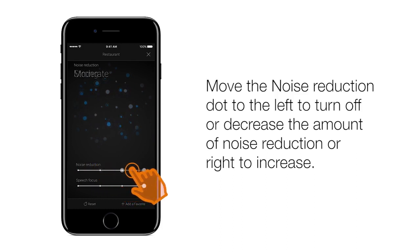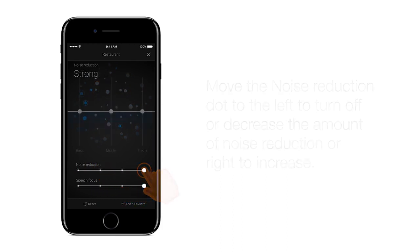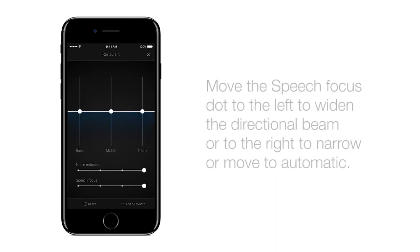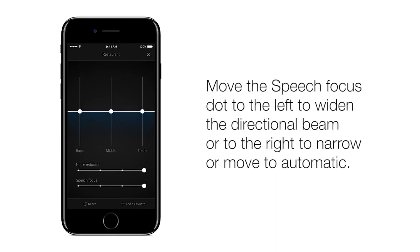Slides to the right one notch to mild, one more to the right: moderate, then all the way to the right: strong.